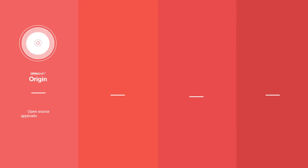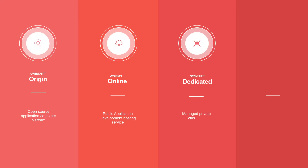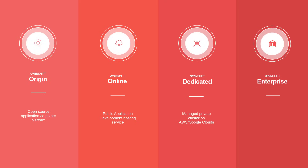OpenShift has four different flavors: OpenShift Origin, which is the original upstream open-source project from which all other models are derived; OpenShift Online, which is Red Hat's publicly hosted version of OpenShift Origin, available for application development and hosting purposes; OpenShift Dedicated, a managed private cluster on cloud platforms like AWS and Google; and OpenShift Enterprise, the on-premise private PaaS offering of OpenShift.